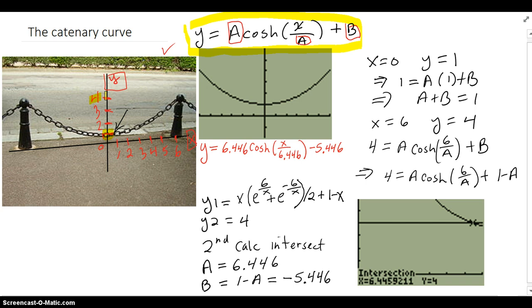So I wanted to see if indeed a cosh curve would look like this chain. So I said, well, when X is 0, Y has to be 1. That's because of that point right there.